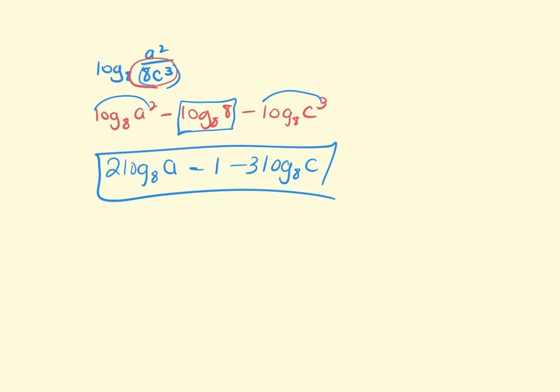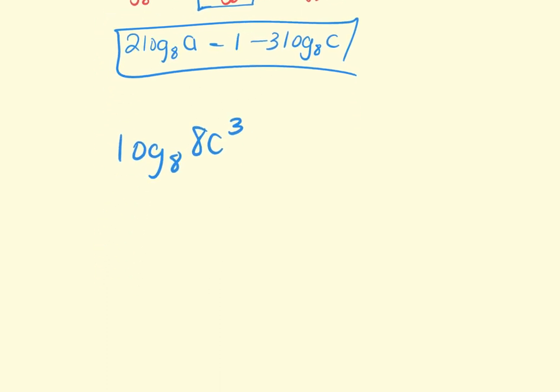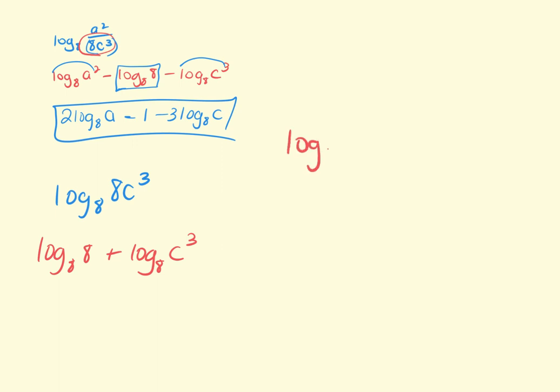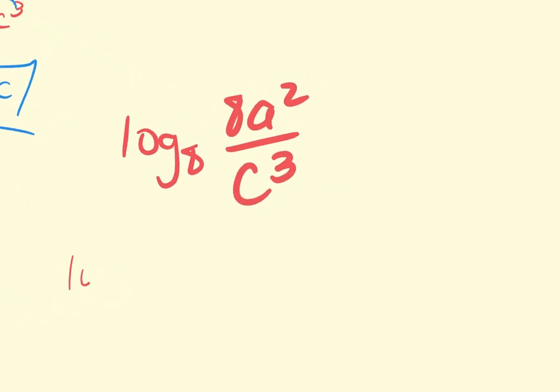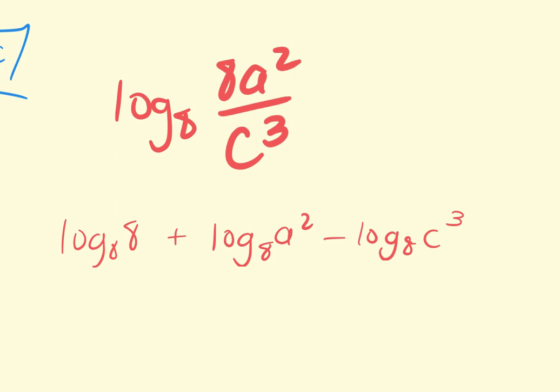If it was multiplication. So if it just said log base eight of eight C to the third, now when I split them up, it'd be log base eight of eight plus log base eight. If there's two things in the top. So if it said log base eight of eight A squared over C to the third, now when I separate that out, these both get the plus. And then the C gets the minus because it's in the bottom. So if there's more than one thing in the numerator, they are addition. If there's more than one thing in the denominator, they are subtraction. And then obviously we'd bump. And then this would get simplified.